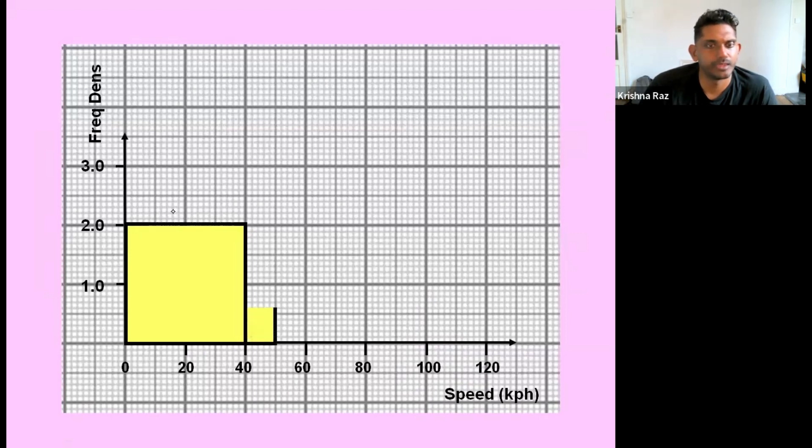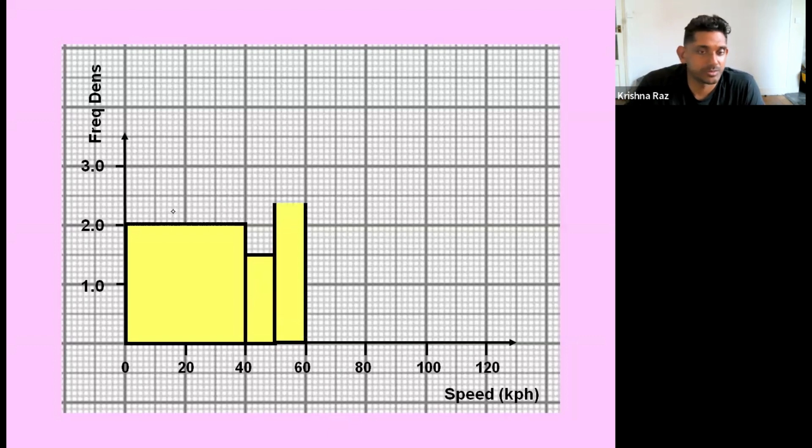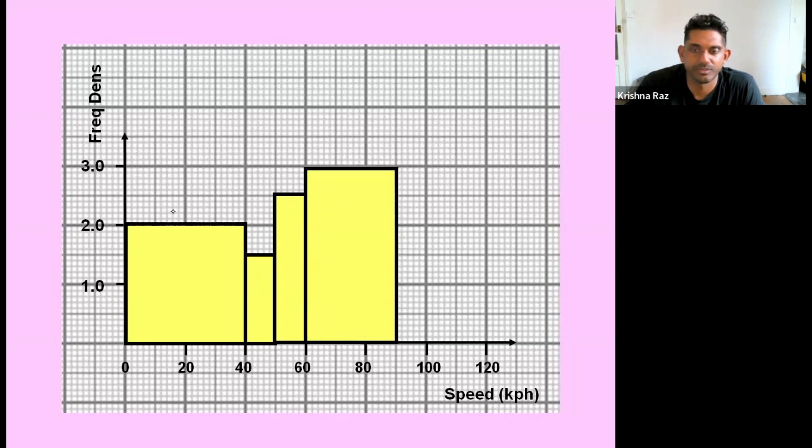So our first bar had a frequency density of 2, the next bar had a width of 40 to 50 and a frequency density of 1.5. The next one went from 50 to 60 and had a frequency density of 2.5. And then we had 60 to 90 and a frequency density of 3. And the final one was 90 kilometers per hour to 110, and that had a frequency density of 1.5.